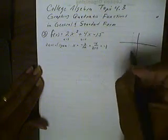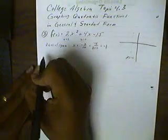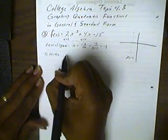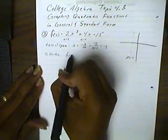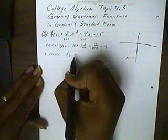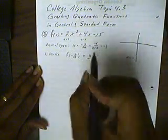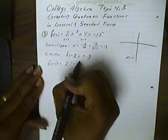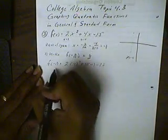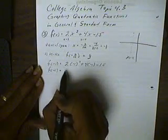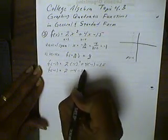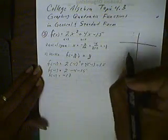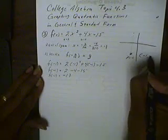Our graph will have negative 1 as the axis of symmetry. Next, we want the vertex. When in general form, we find the vertex by taking the function itself and inputting the formula for the axis of symmetry. Whatever answer we get for y completes our vertex. So negative 1 is placed into the function: 2 times negative 1 squared plus 4 times negative 1 minus 15. Negative 1 squared is 1, times 2 is 2; 4 times negative 1 is negative 4; and then negative 15. This all becomes negative 17. And this is our vertex, at negative 1, negative 17.